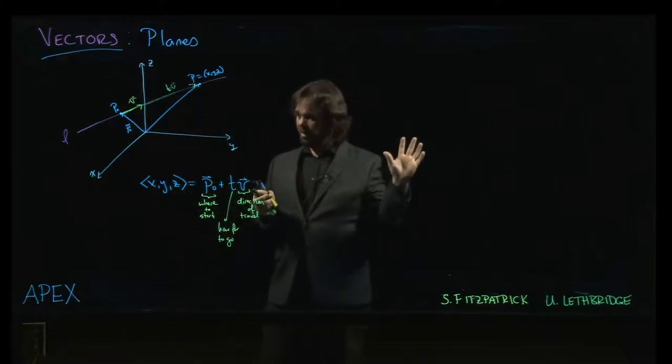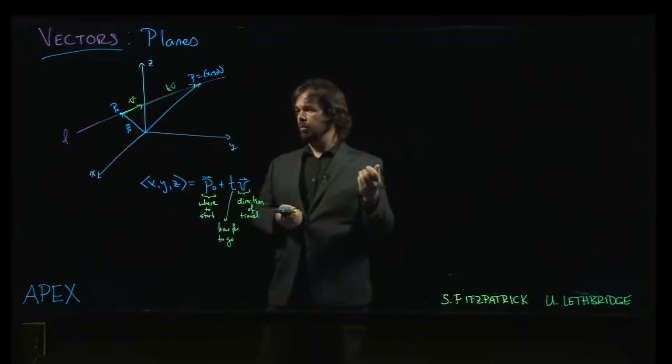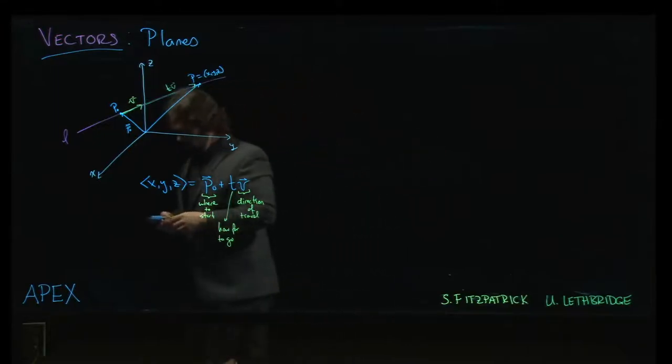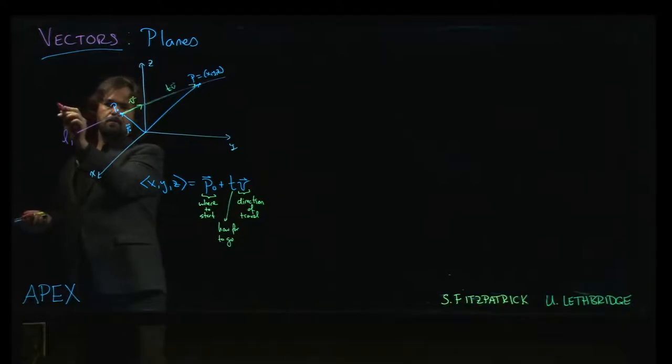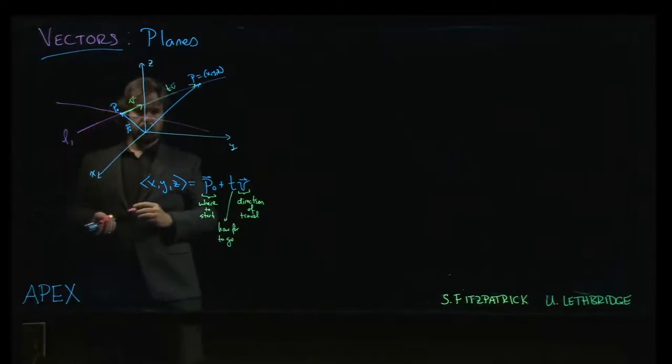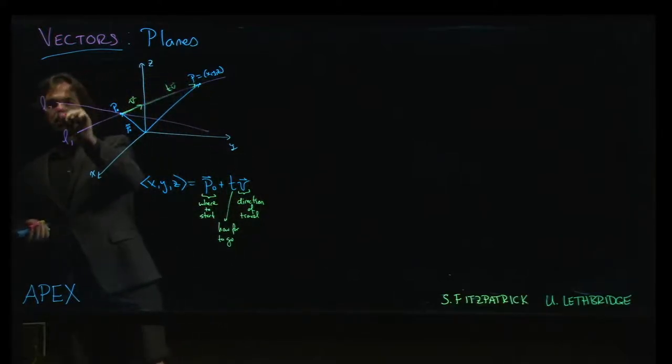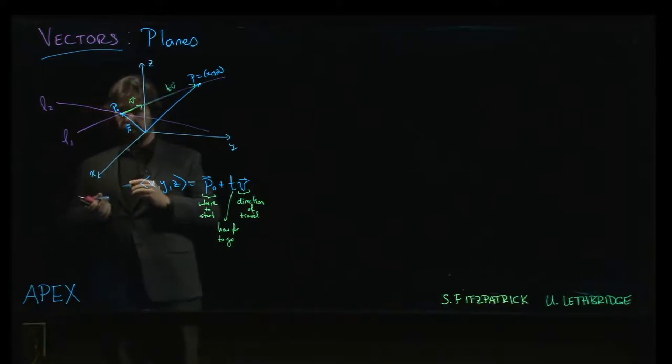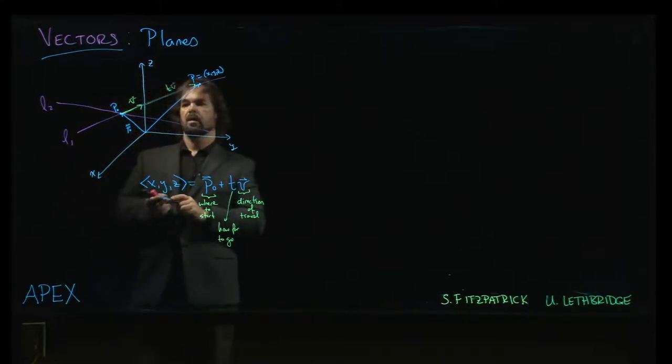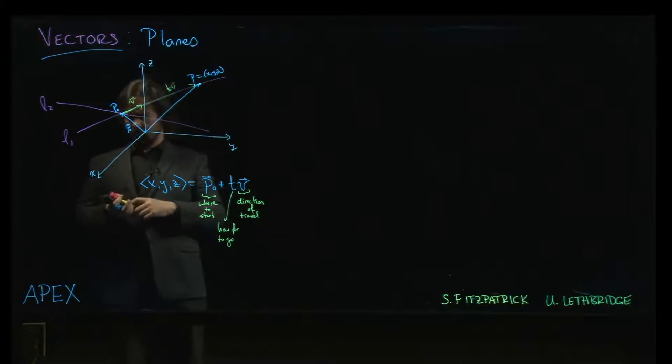Now, that's lines. We want to talk planes. How do we generalize? How do we get to a plane? Well, one way we can do this is say, well, this is one particular line. And now, I want to add another line in. Let's say, like so. So, now I've got an L2. And I'm going to choose my L2 so that it also passes through this same point, this same p0.